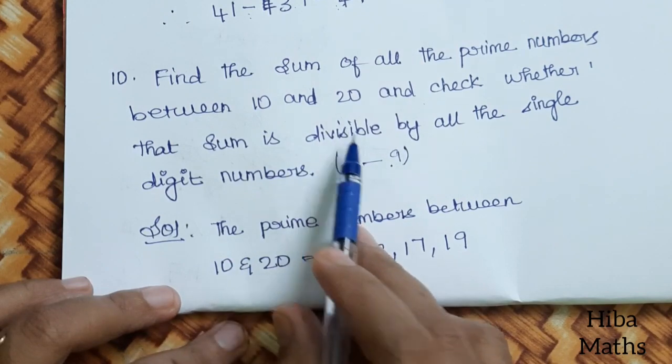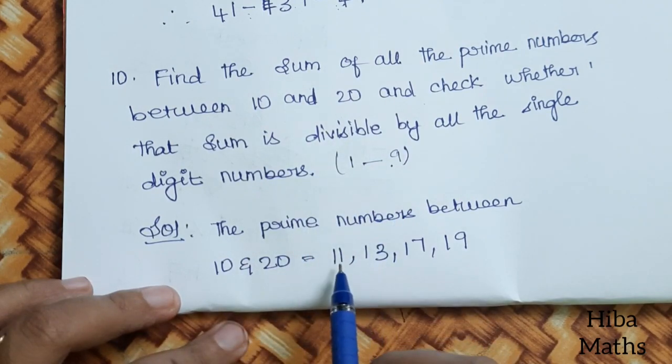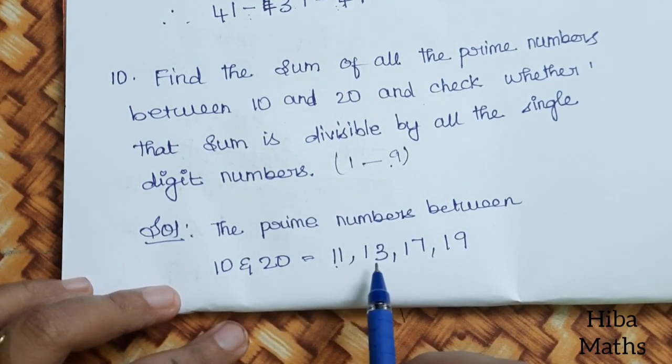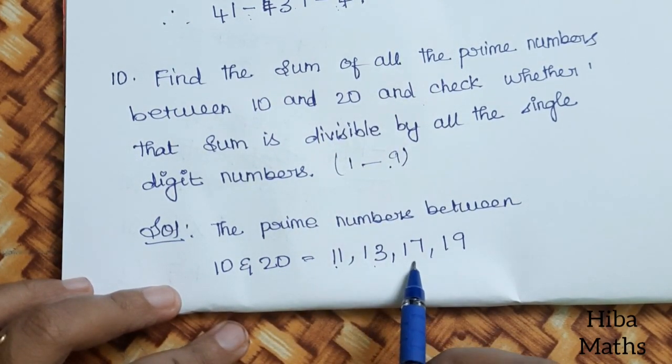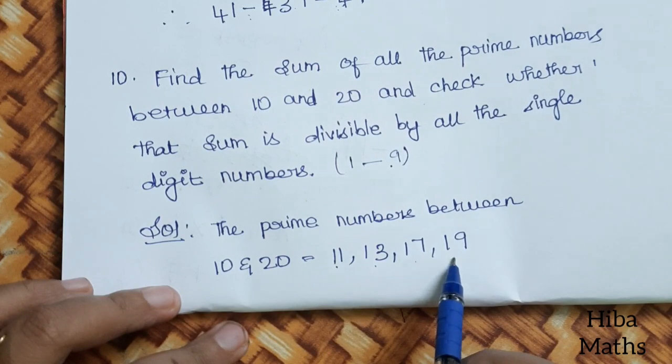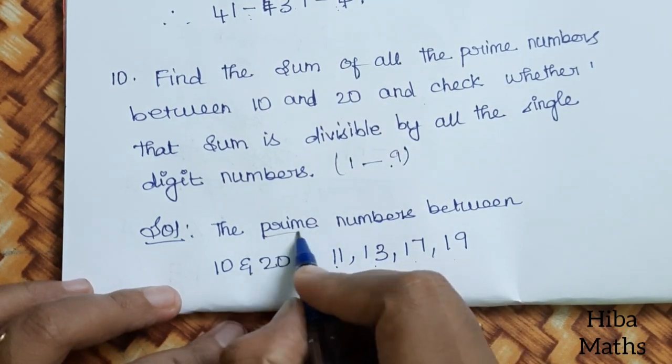Between 10 and 20, the prime numbers are 11, 13, 17, and 19. If you have any doubt about prime numbers, remember that a prime number is only divisible by 1 and itself.